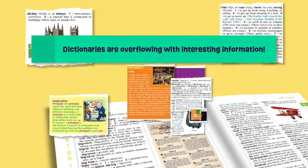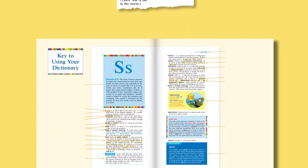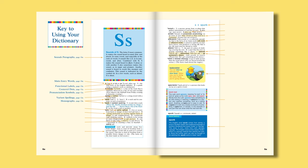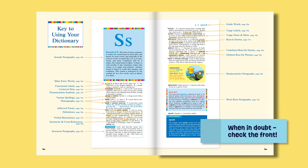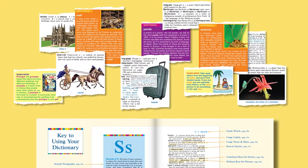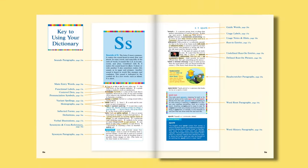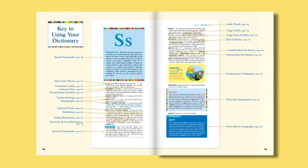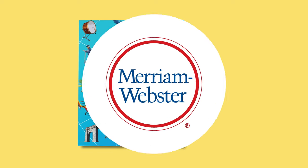Dictionaries are overflowing with interesting information. Some dictionaries may look different, but every dictionary starts with a section that explains how its information is presented. So if something doesn't make sense to you, you can always check the front of the dictionary. As you can see, dictionaries are more than a collection of definitions. They tell us the story of words and help us discover new words along the way. Now that you know a dictionary's secrets, it's time to pick one up and see what you find.